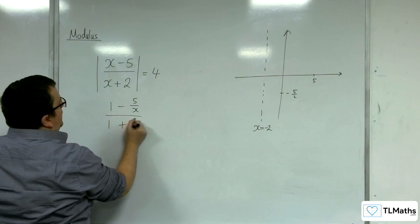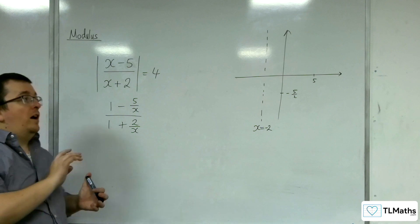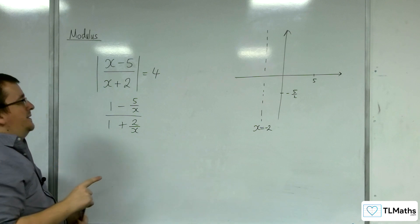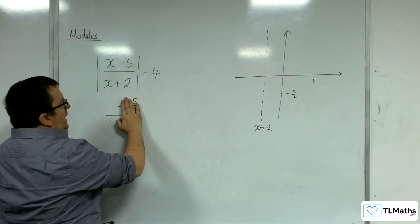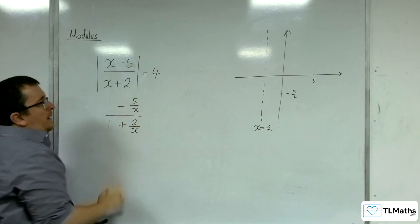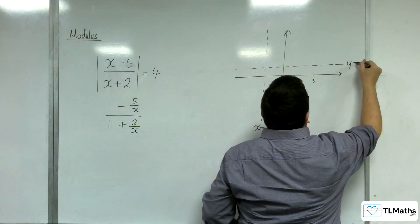And the idea is that as x gets larger and larger and larger in either direction, positive or negative, these two fractions are going to get smaller and smaller and smaller, and you're going to be left with 1 over 1. So, y equals 1 is a horizontal asymptote.